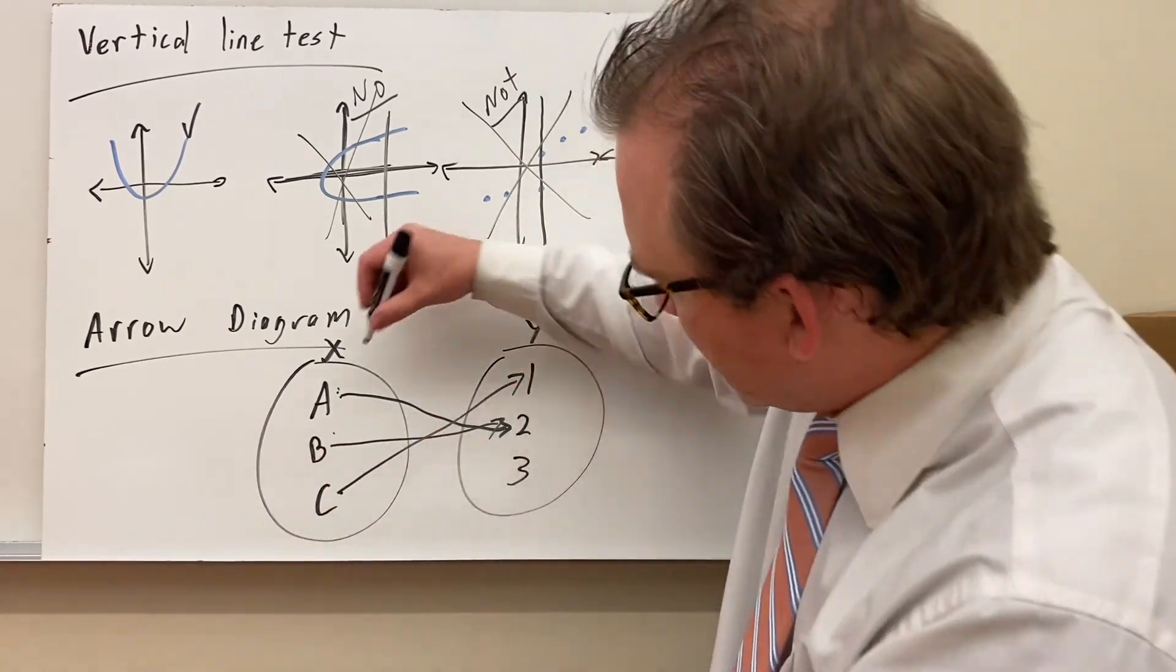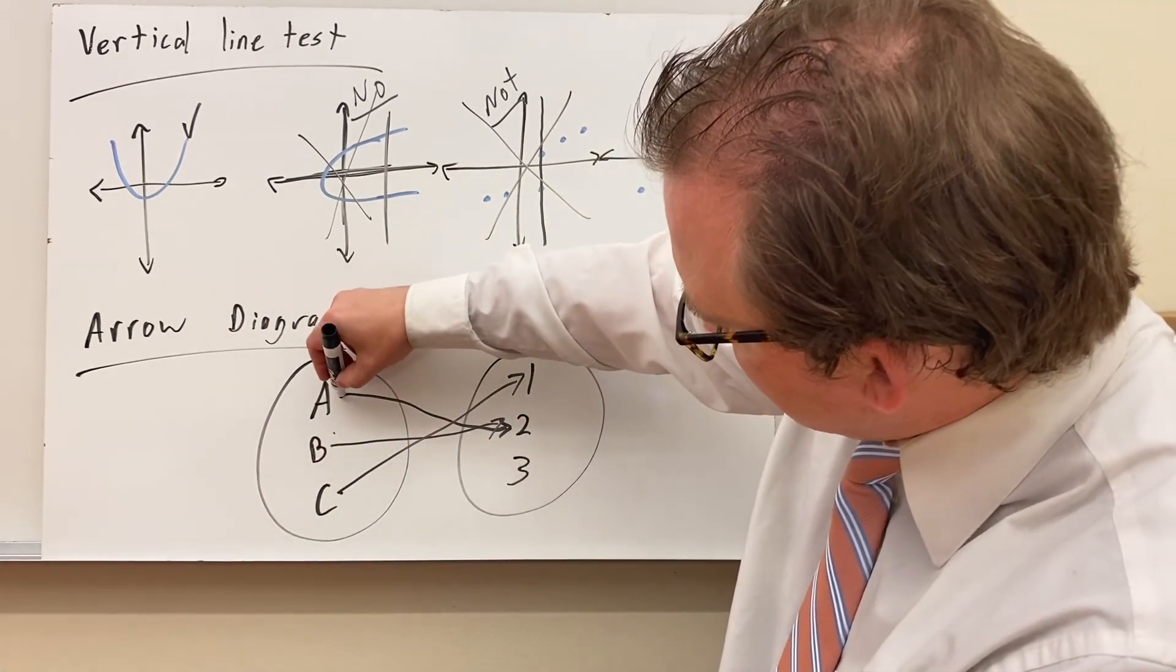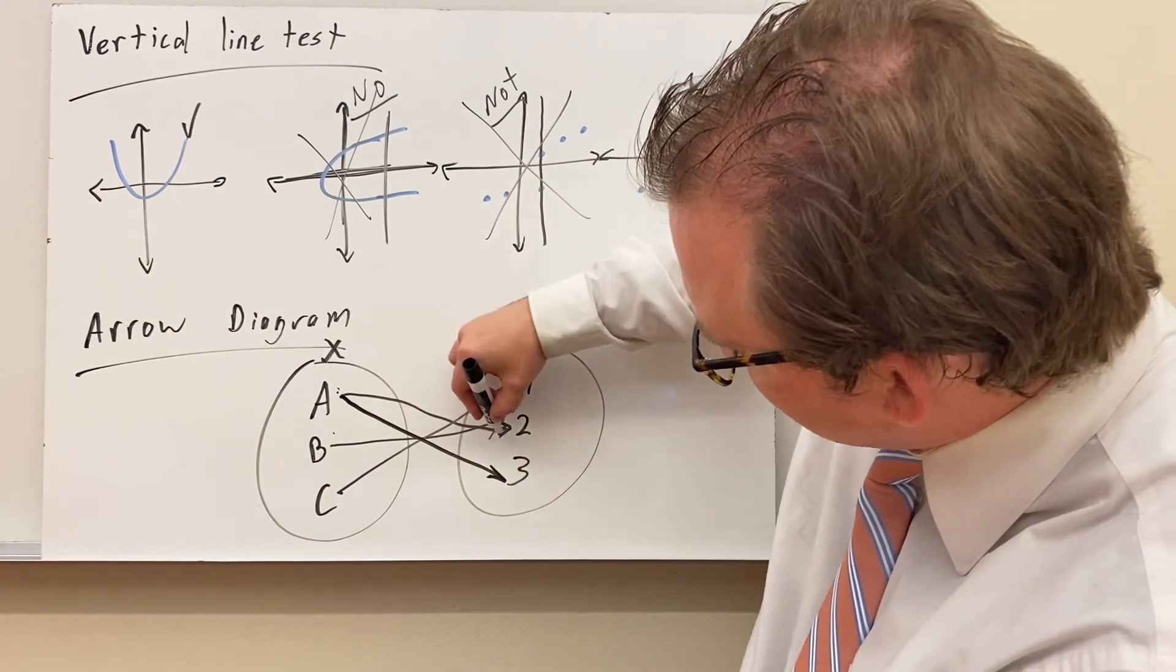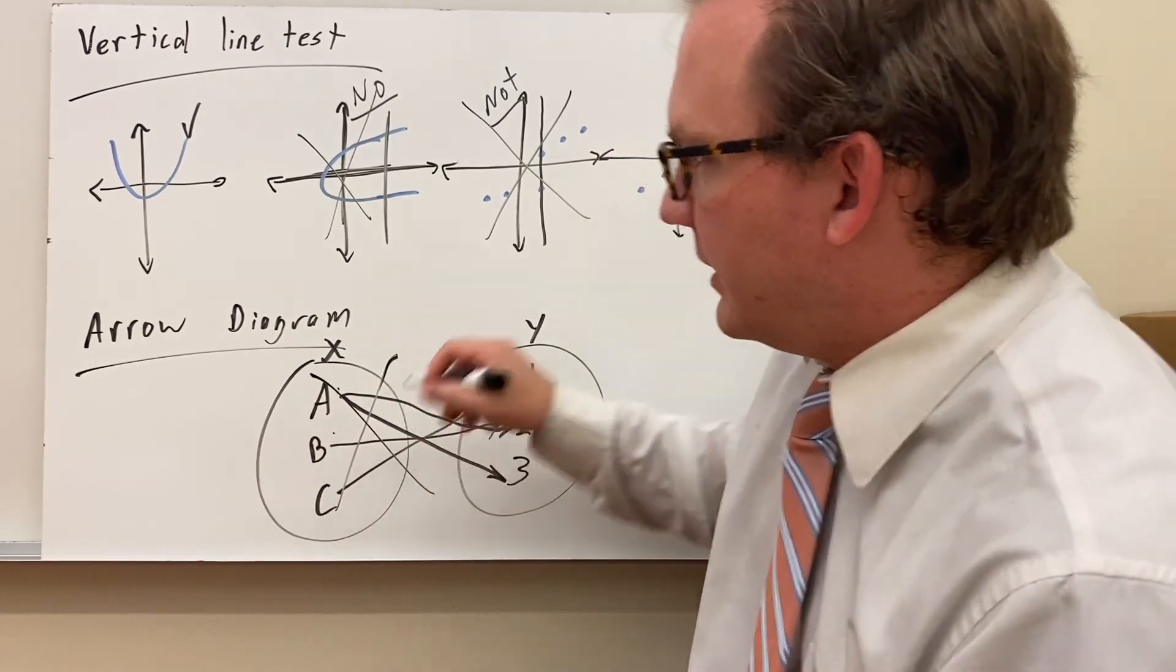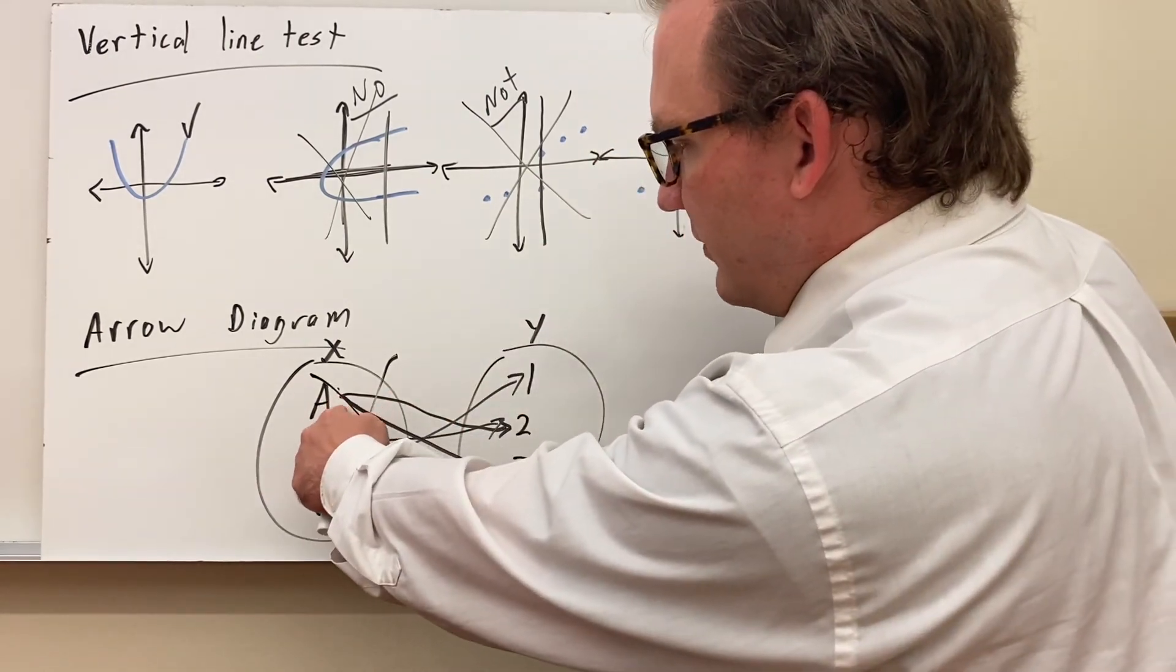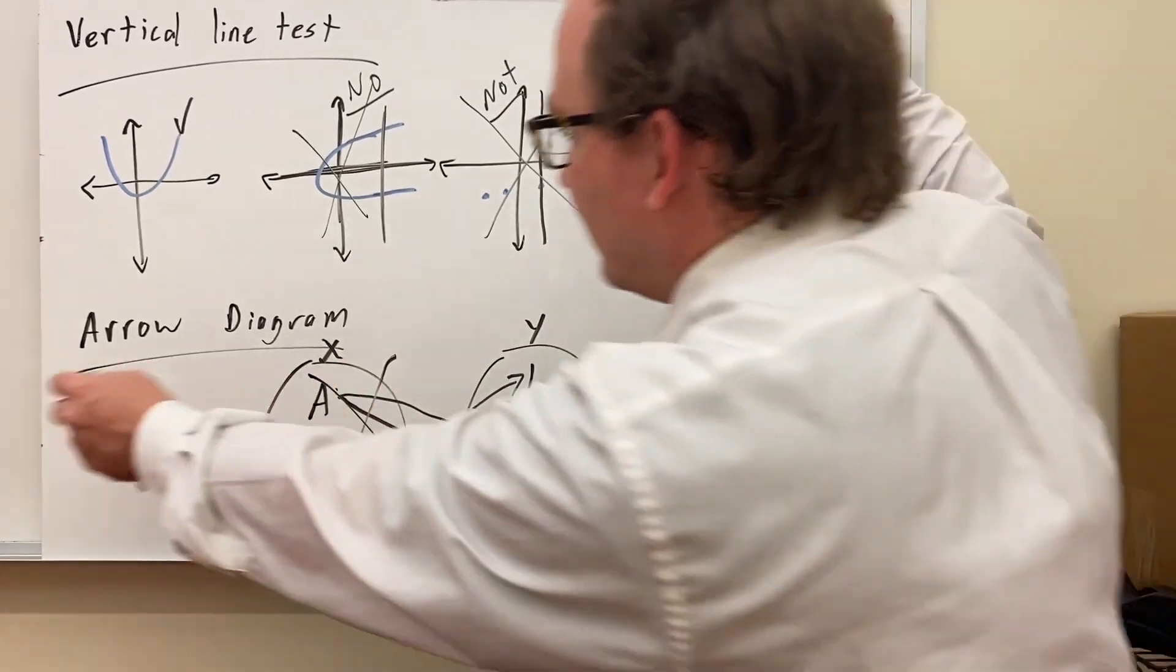At this point, this is a function because for each input it only goes to one output. However, say if I said a sometimes gives me three and sometimes gives me two, now it is not a function. If one input gives me two outputs, not a function.